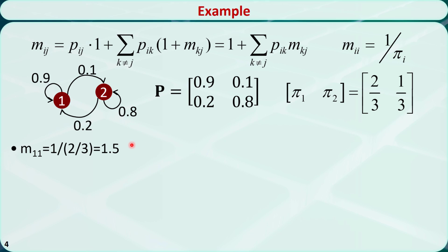This means if we are currently in state 1, it will take an average of 1.5 transitions to first come back to state 1. Similarly, m22 is equal to 3, meaning if we are currently in state 2, it will take an average of 3 transitions to first come back to state 2.